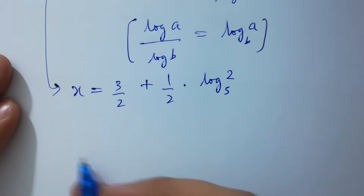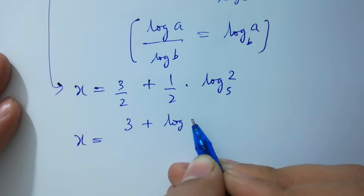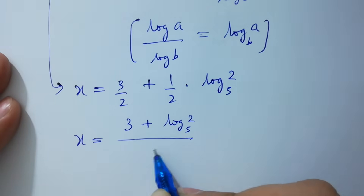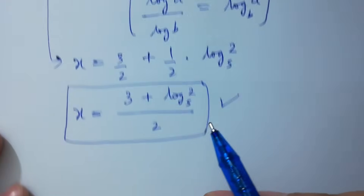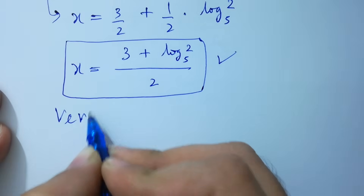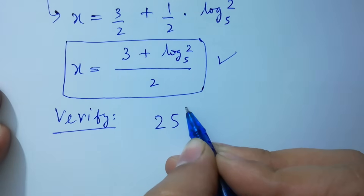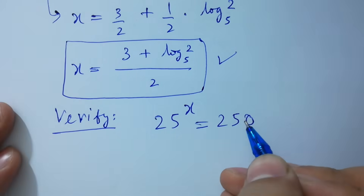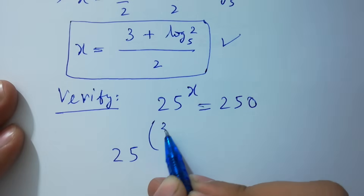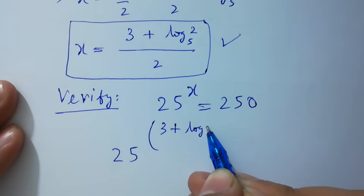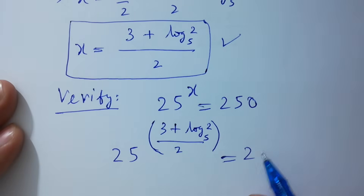So x equals (3 + log₅2) / 2, which is our final value of x. Now let's verify: 25 to the power x equals 25 to the power (3 + log₅2)/2, and this should equal 250.